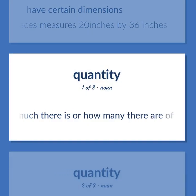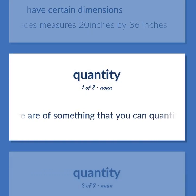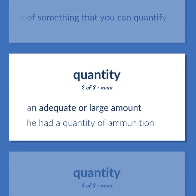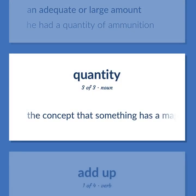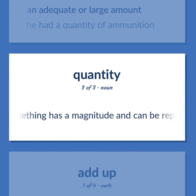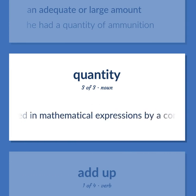Quantity: How much there is or how many there are of something that you can quantify. An adequate or large amount — he had a quantity of ammunition. The concept that something has a magnitude and can be represented in mathematical expressions by a constant or a variable.